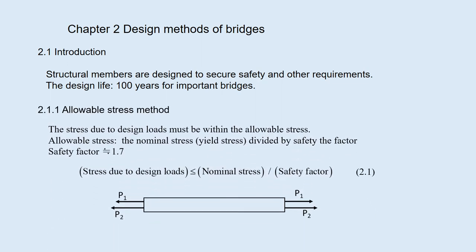2.1.1, Allowable Stress Method. Stress occurs in the structural member when the external loads such as P1 and P2 are applied, as shown here. The stress must be within the allowable stress, which is the nominal stress divided by the safety factor, as shown in equation 2.1. The yield stress is usually adopted as the nominal stress for steel. The safety factor depends on the material properties and strengths. For steel members, the safety factor of about 1.7 is usually adopted.